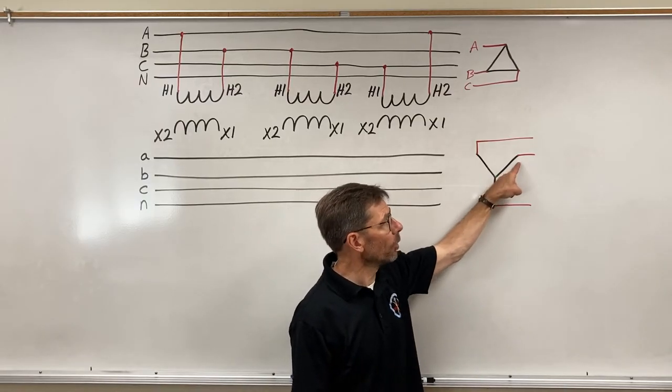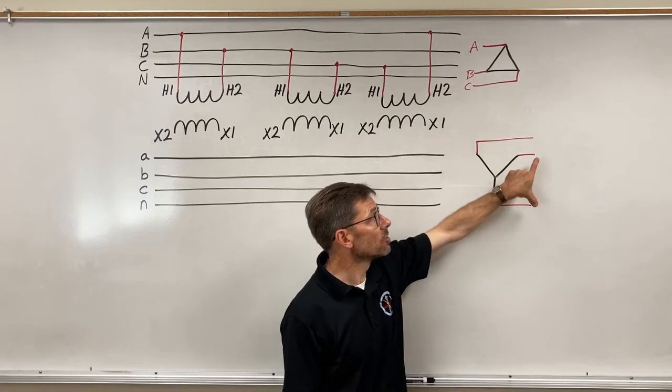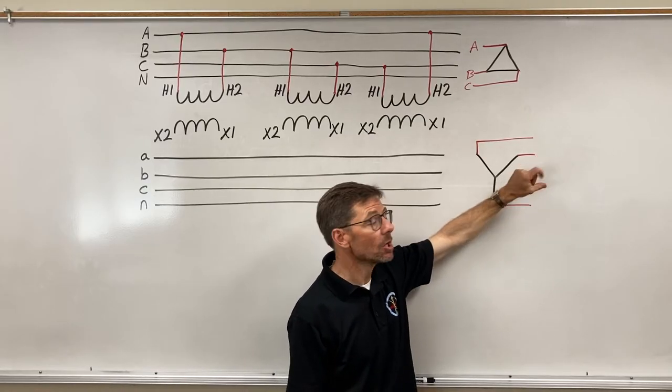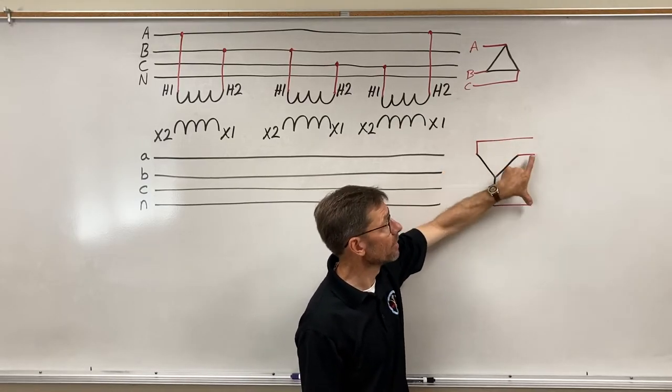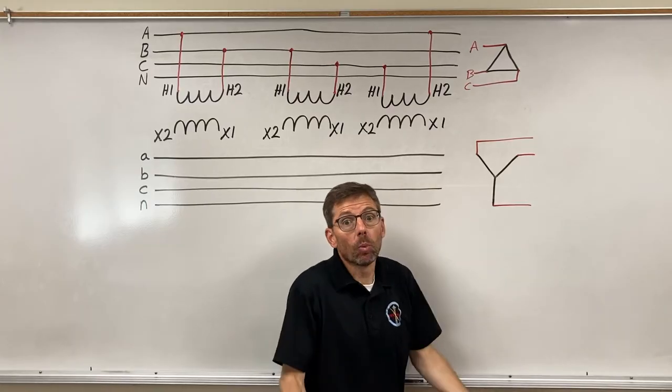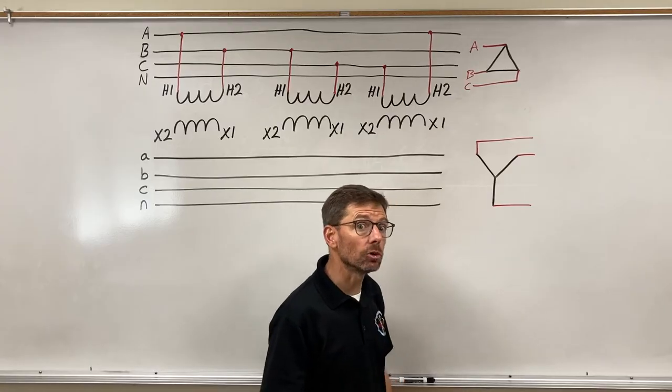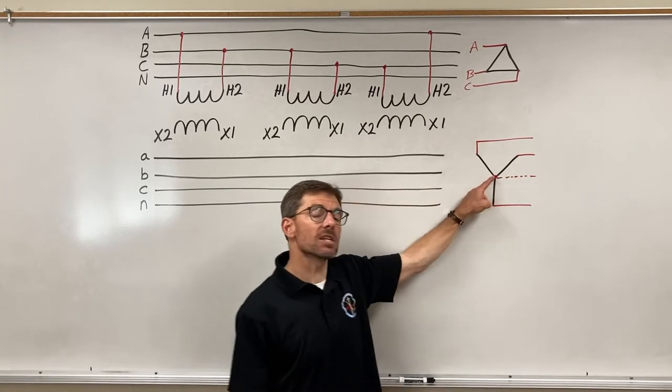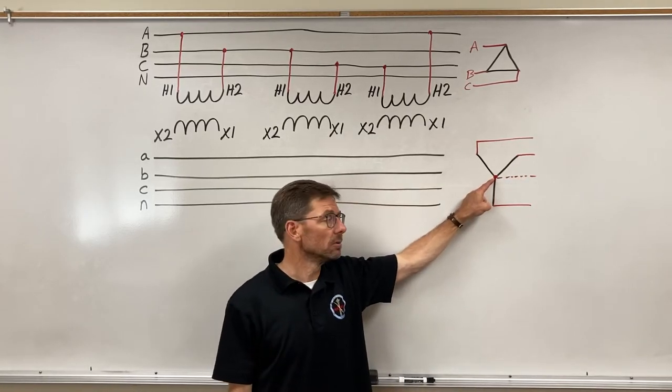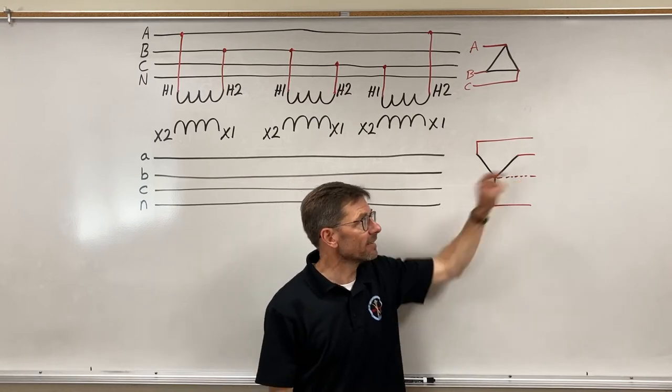Maybe I can have 120 volts per phase and 208 between the lines, or 277/480—they're both Y configurations. But for that I need a neutral. That's this point in the middle, the neutral, and so I draw it in a dashed line.